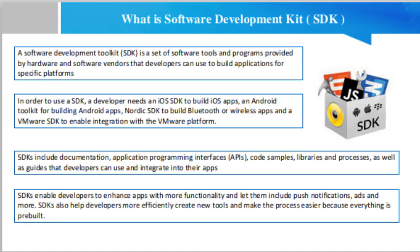An SDK is the tool and component piece of code that has been created for a specific purpose, while an API is just an interface for a service. A software development kit is a set of tools that allows developers to write or use an existing framework to develop applications for a given platform. SDKs are also the backbone of many popular applications, games, and apps.